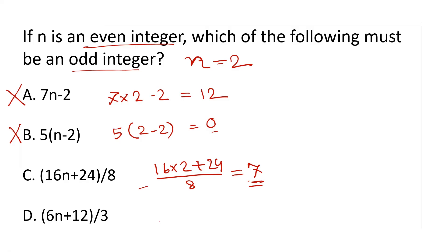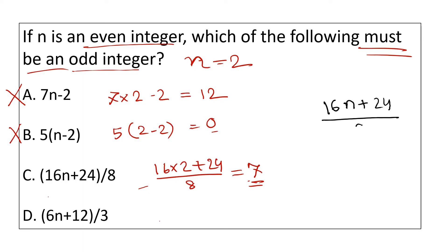The question asks which must be an odd integer. The answer is the odd integer option — 16 plus 24 divided by 8, which gives 5. The answer is confirmed as option C.